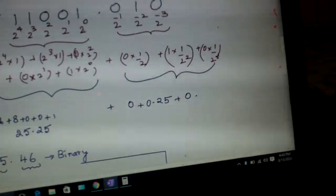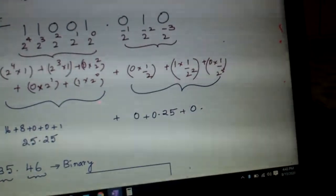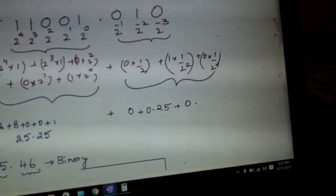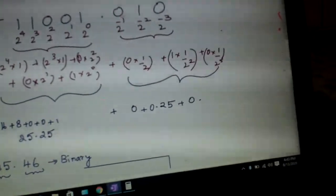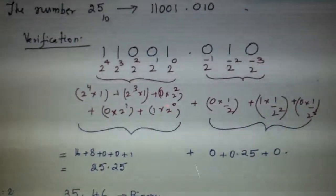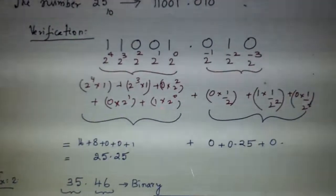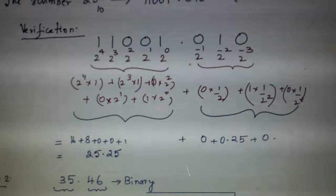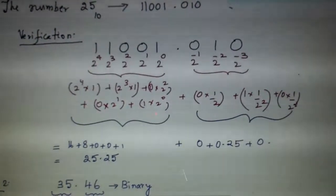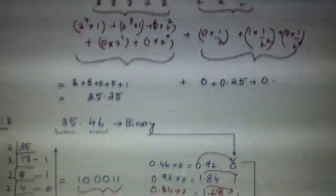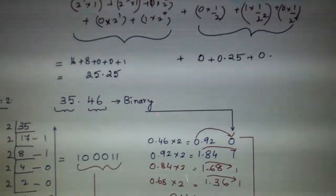And now convert back. This as before 2 power 0, 2 power 1, 2 power 2, 2 power 3, 2 power 4 are the binary weights. And the place values are 11001. Here 010 are their place values. And the positional weights are 2 power minus 1, minus 2, minus 3. So do the multiplication. This is 0, 1 by 2, 1 by 4, 1 by 8. So when you add, this part is 25, this part is 0.25.